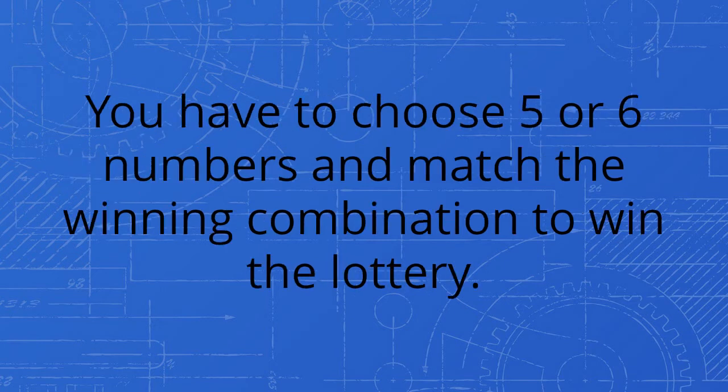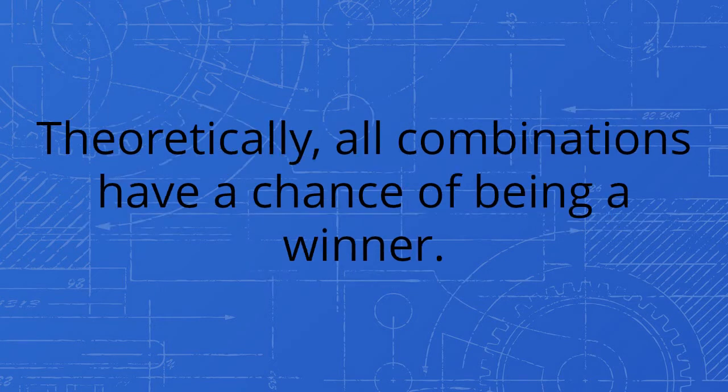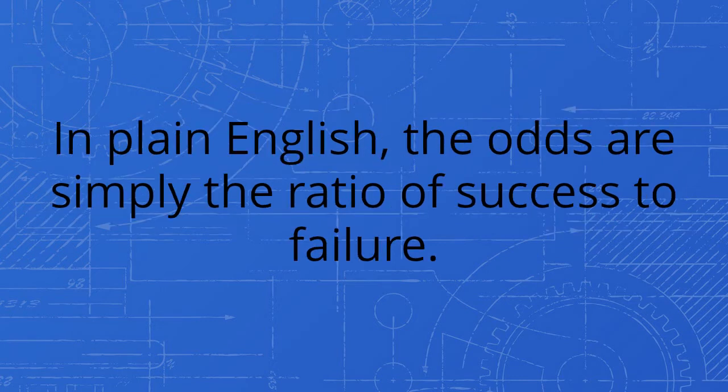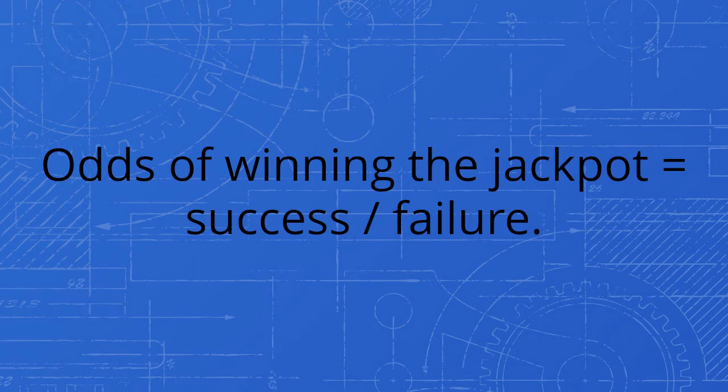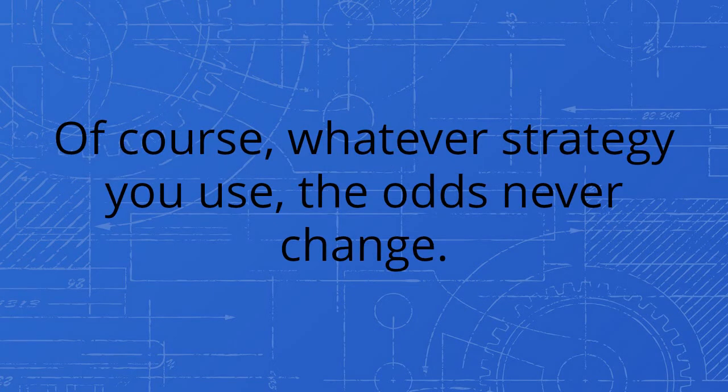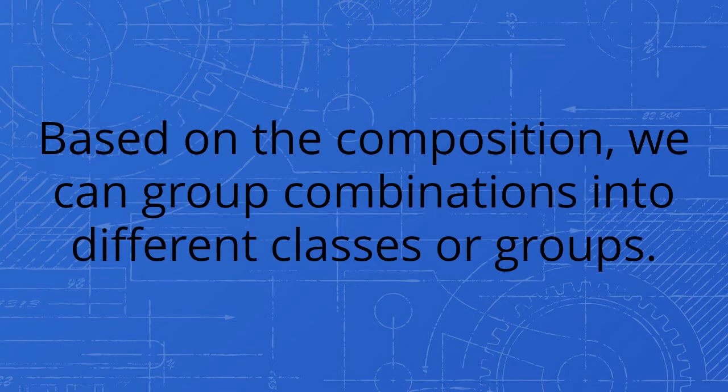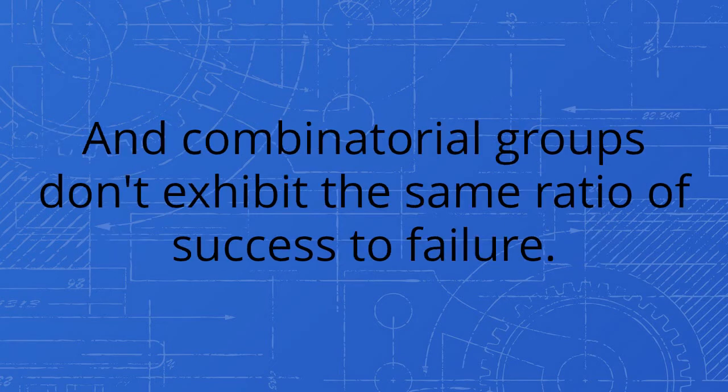But you don't win the lottery by picking a single number. That's not how the lottery works. You have to choose five or six numbers and match the winning combination to win the lottery. Theoretically all combinations have a chance of being a winner. Your odds of winning the jackpot prize are one against all the many possible ways you fail. In plain English, the odds are simply the ratio of success to failure. Odds of winning the jackpot equals success over failure. Of course, whatever strategy you use, the odds never change. But looking more deeply, combinations have different compositions based on the composition. We can group combinations into different classes or groups, and combinatorial groups don't exhibit the same ratio of success to failure.